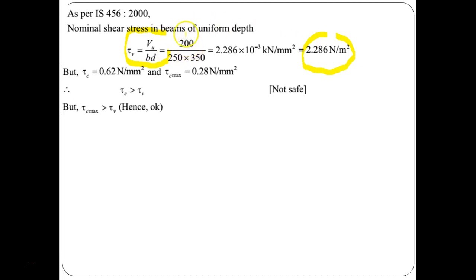So, now we know this already given tau C is 0.62 Newton per mm square is already given and tau C max is 0.28 Newton per mm square. So, we can say that this tau C is greater than tau V and we can say it is not safe but we also know that tau C max is greater than tau V which is okay. So, we need shear reinforcement according to clause number 40.4 which is regarding design of shear reinforcement.